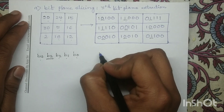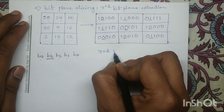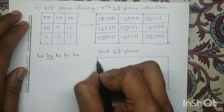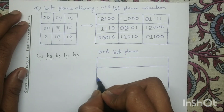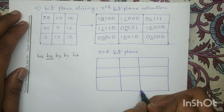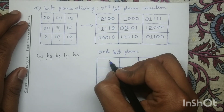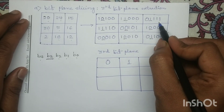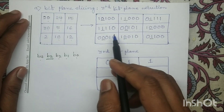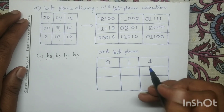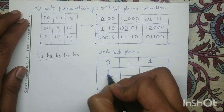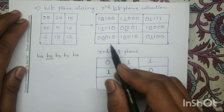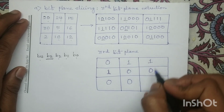So from this binary representation, if we extract the third bit plane: from the first pixel the third bit plane value is 0, from the second pixel it is 1, from the third pixel it is 1. Similarly in the next row, the third bit plane values are: for the first pixel it is 1, for the second pixel it is 0, for the third pixel it is again 0. For the next row: for the first pixel it is 0, for the second it is 0, and for the third pixel it is 1.